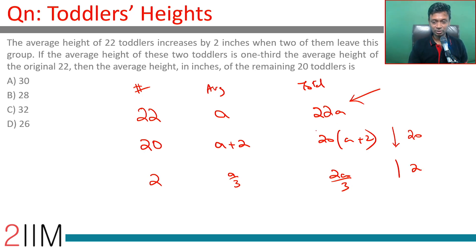So this plus the sum of these two should equal this. We manipulate this and we should be able to find a. We need to find the average height of the remaining 20 toddlers, so our answer is a plus 2.